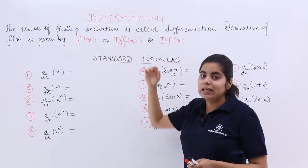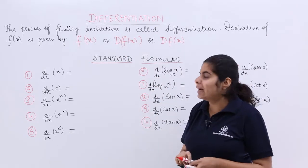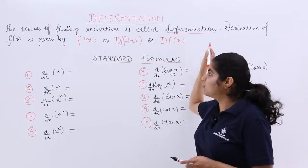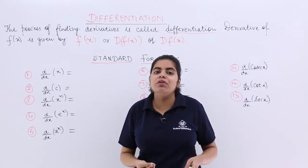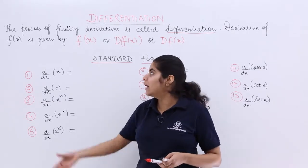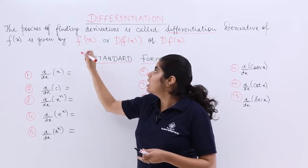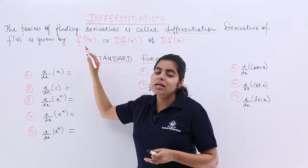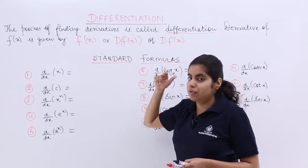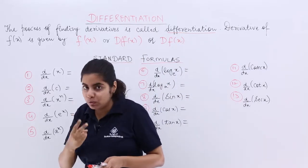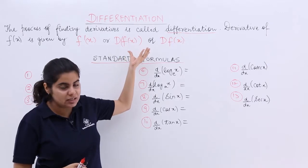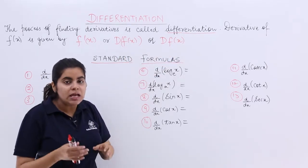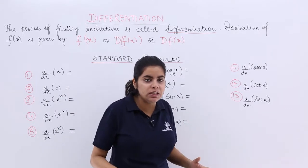So the process of finding derivatives is called as differentiation. And if you have been given a function fx, its differentiation or derivative is given by f'x. This is pronounced as f'x or dfx. Now dfx can be written in two ways. One way is writing d and then making a brackets and writing fx. Otherwise, simply dfx.